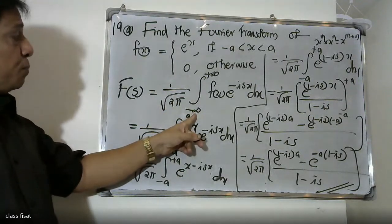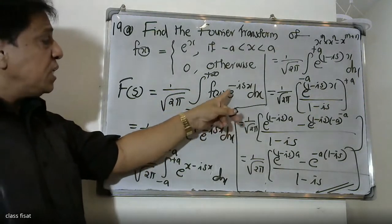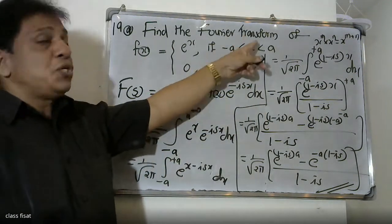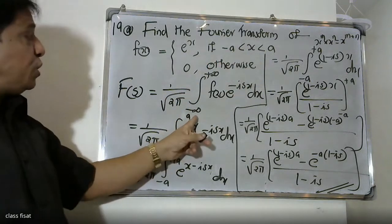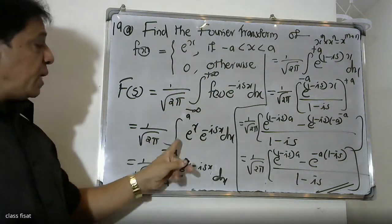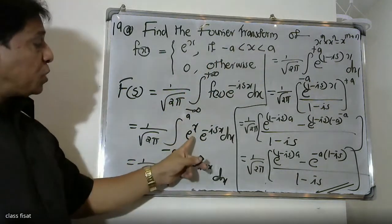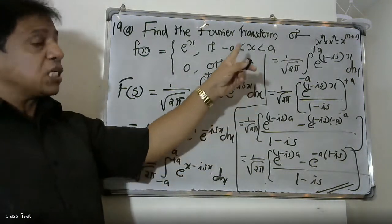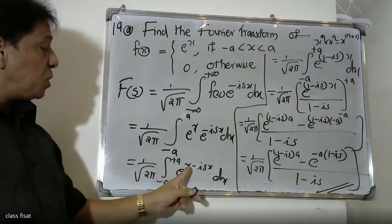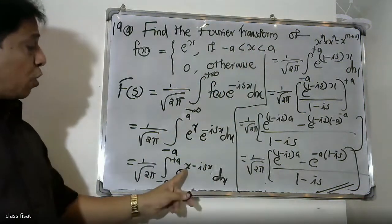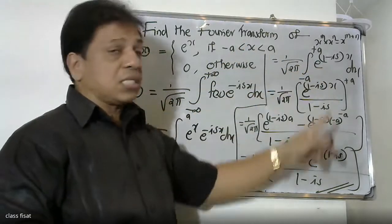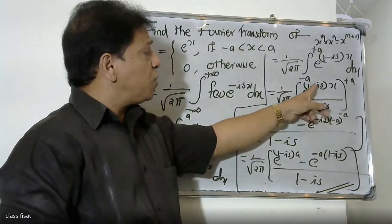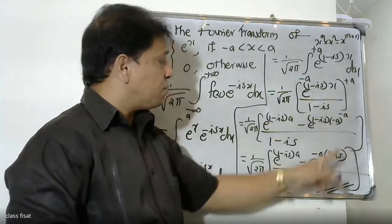To recap: the Fourier transform formula is (1/√2π) times the integral from minus infinity to plus infinity of f(x) e^{-isx} dx. Since f(x) is defined from -a to a, we integrate from -a to a of e^{-isx} dx. Taking x^m times x^n gives x^{m+n}, so e^x times e^{-isx} becomes e^{(1-is)x}.